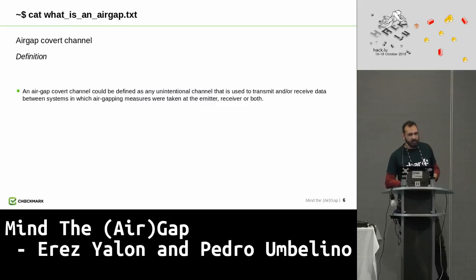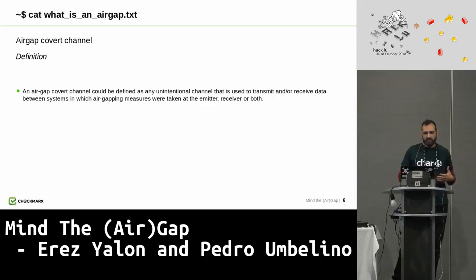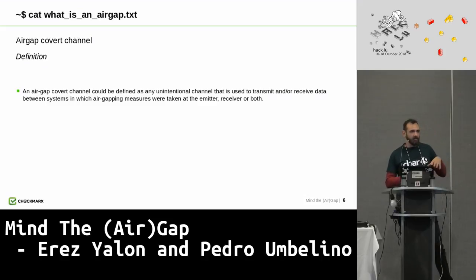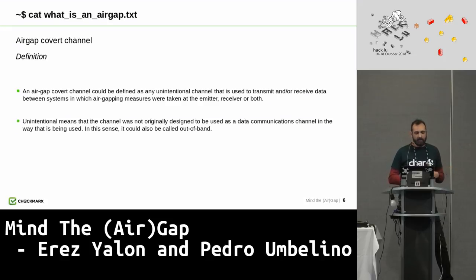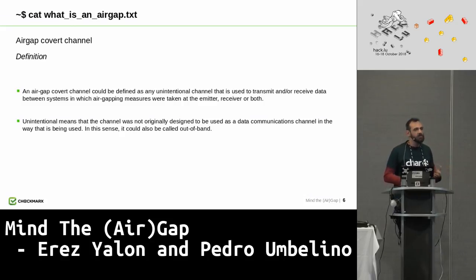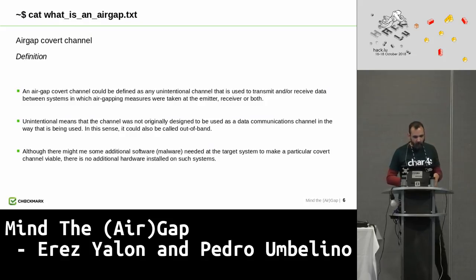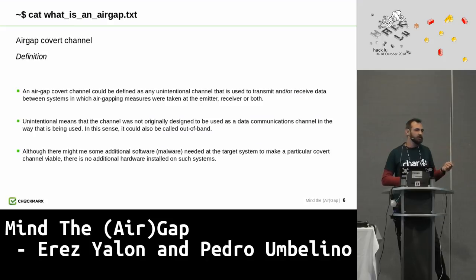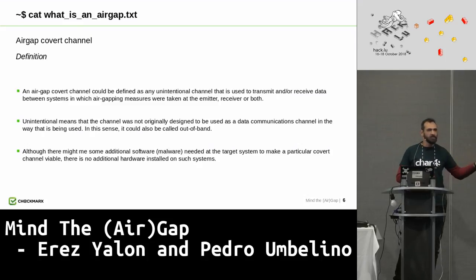A covert channel can be defined as an unintentional channel used to transmit or receive data between systems where air gapping measures are in place. Unintentional means the channel was not originally designed to transmit data, but is still used that way. Although there might be some additional software needed on the target system, usually there are no hardware modifications at all — it's not like an attacker plugging in a USB Wi-Fi card to bridge the air gap.